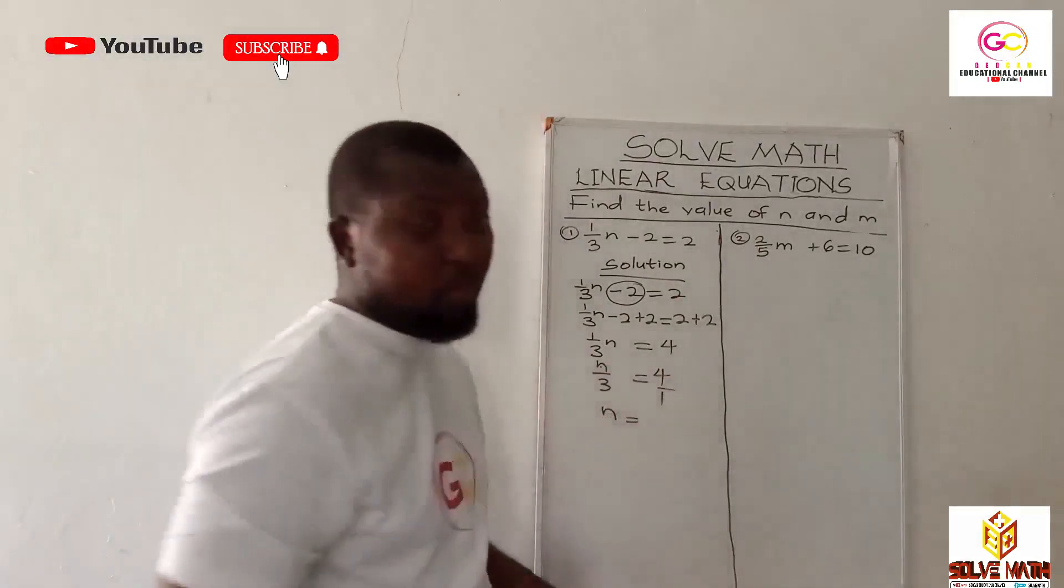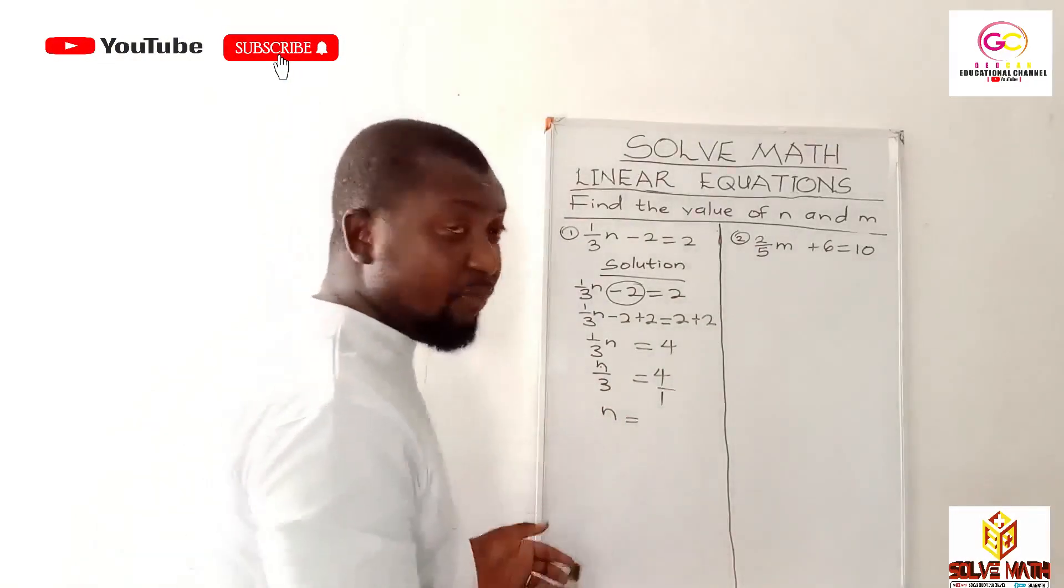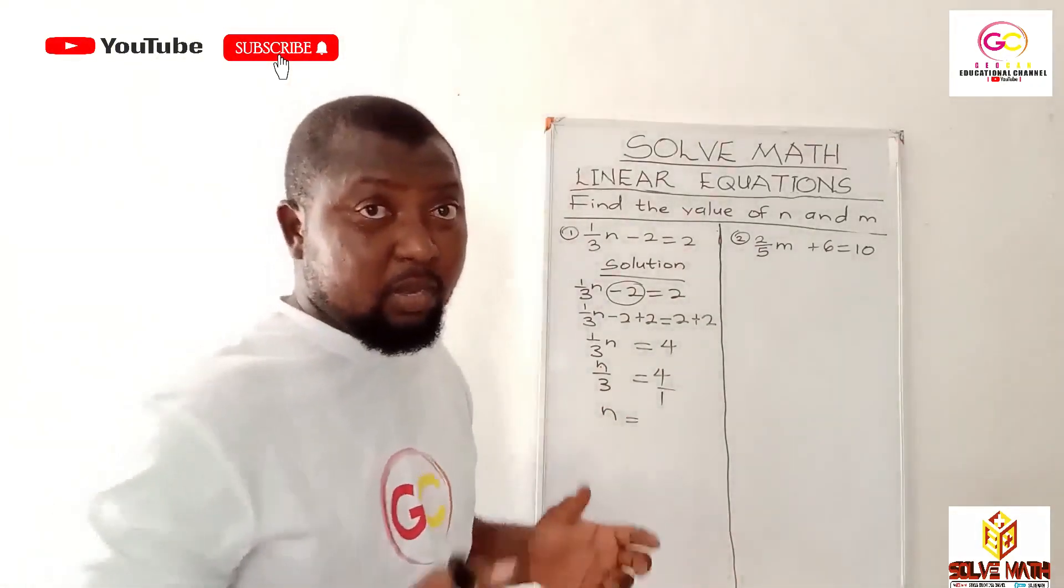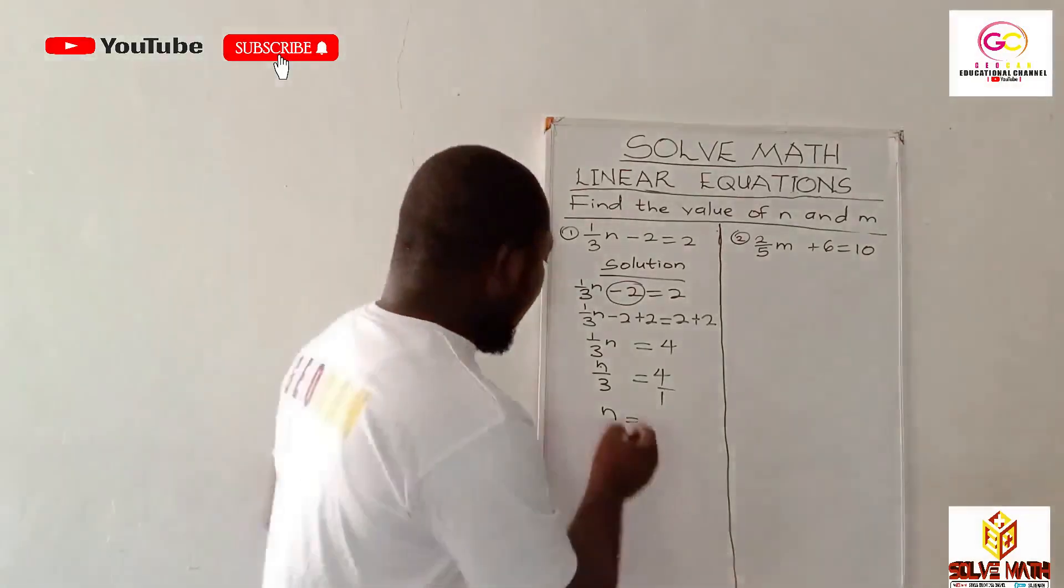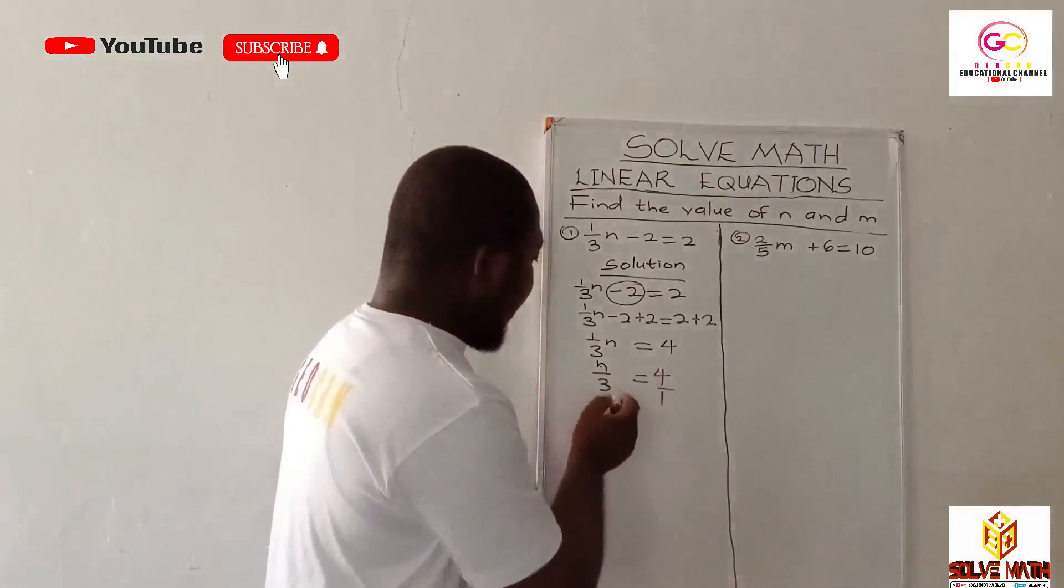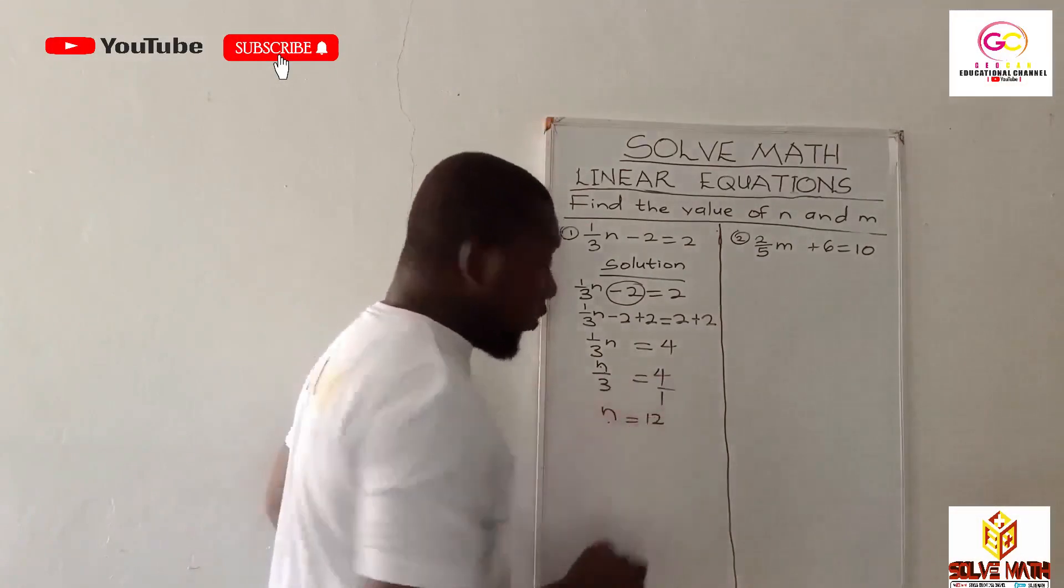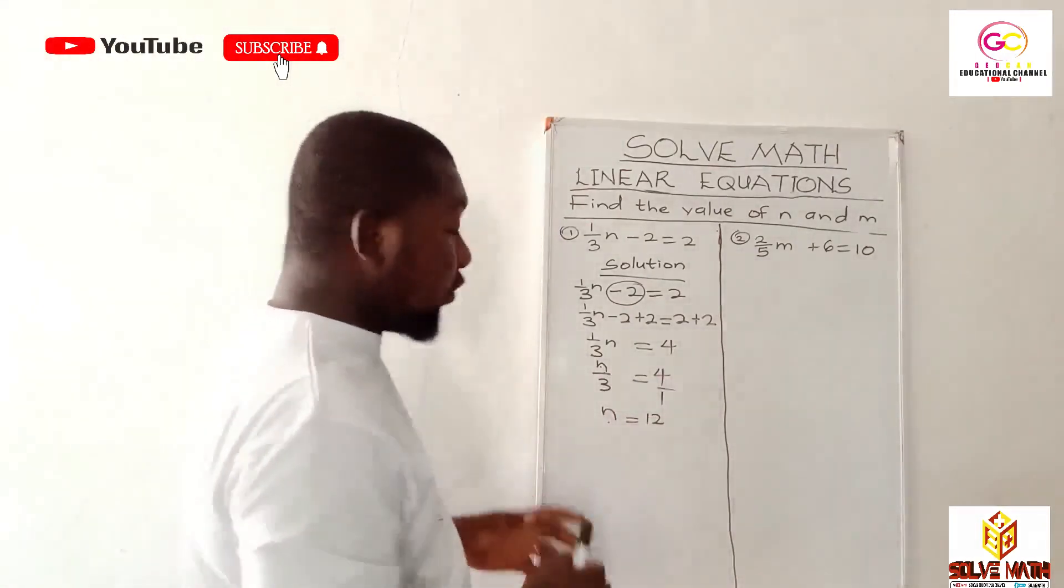Now n times one will be n. Any number times one is that number. Any variable times one is that variable. So n times one is the same as n. Now three times four is twelve. So n equals 12. We're able to find the value of n.